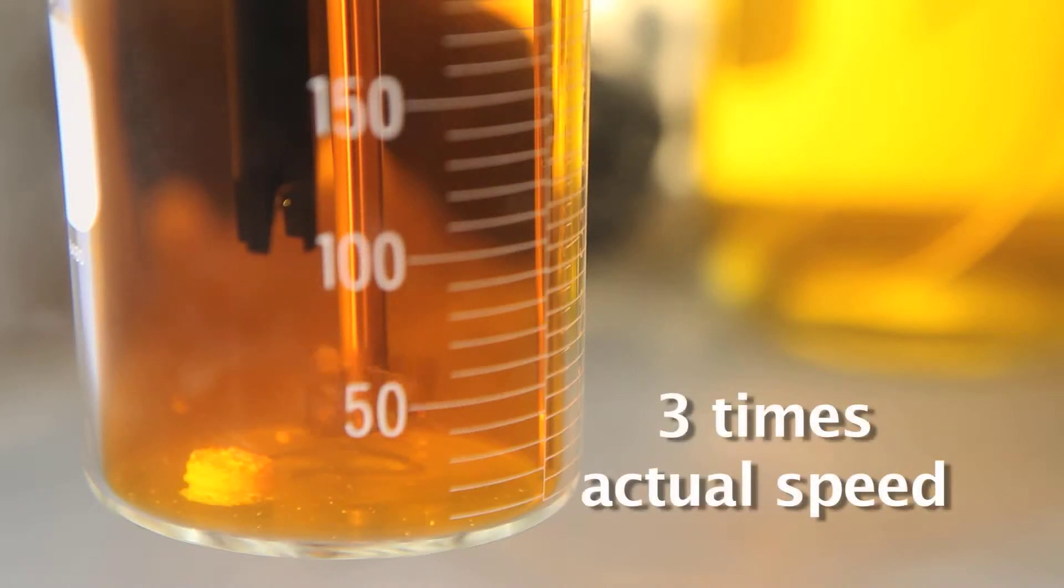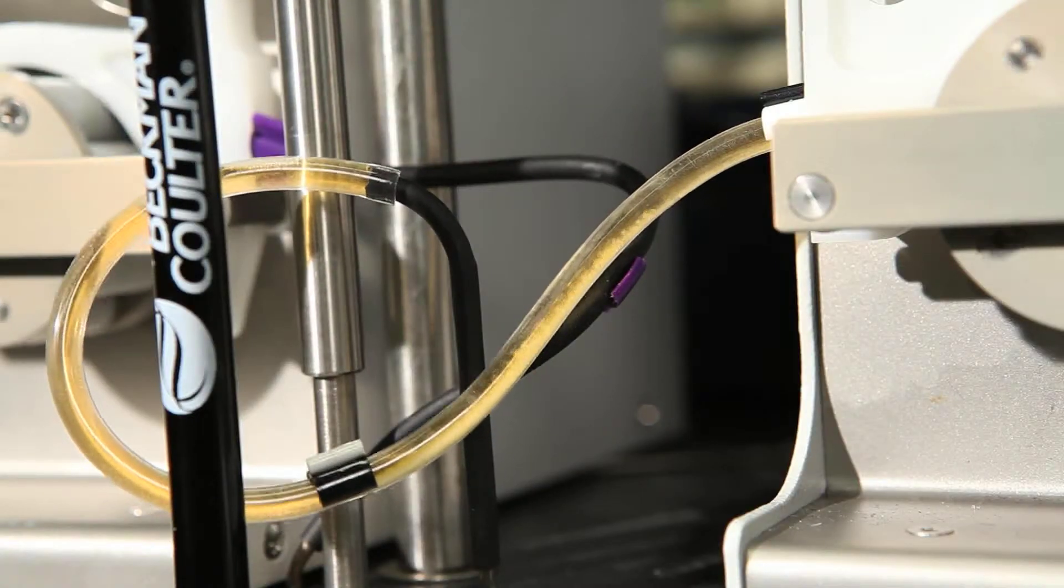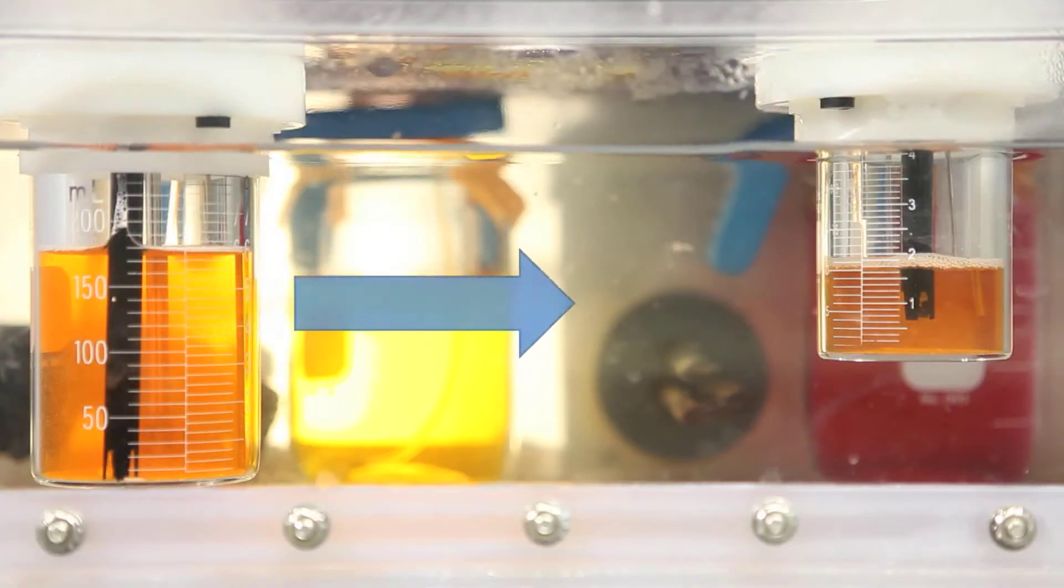The drug product typically begins disintegrating and dissolving in the gastric chamber. Stomach fluid, as well as dissolved drug, solid drug particles and excipients present in the gastric chamber are transferred to the duodenal chamber in a first-order manner, typical of humans.